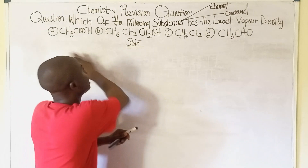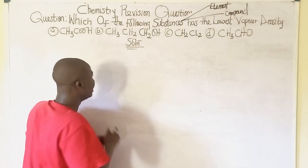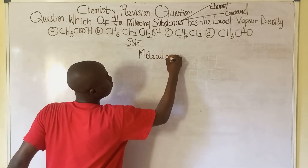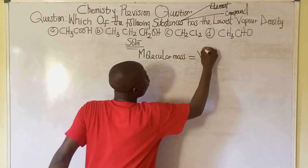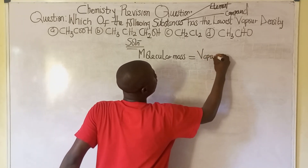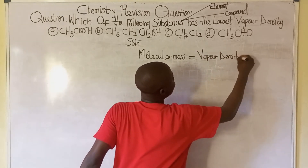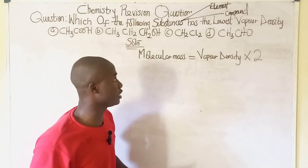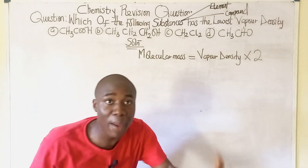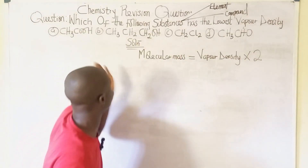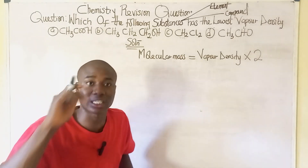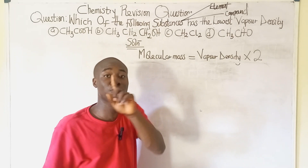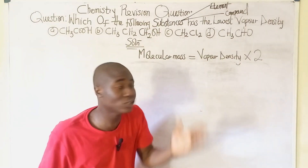We are trying to determine the vapor densities of these compounds. It must be noted that molecular mass equals vapor density times two. They are asking us to get vapor density, and after solving the vapor density for all the options, we check the one that is lowest — that will be our answer.